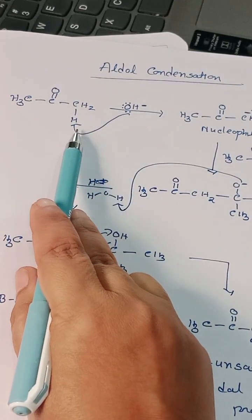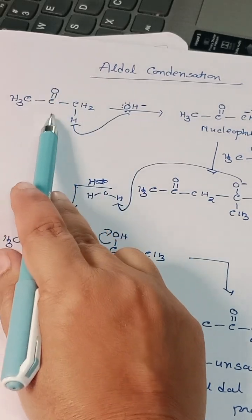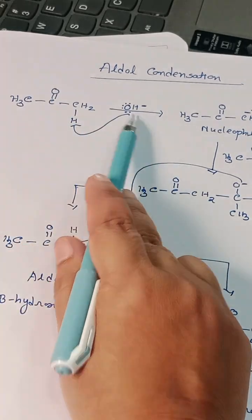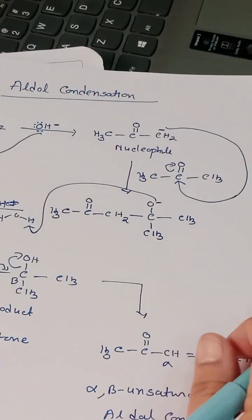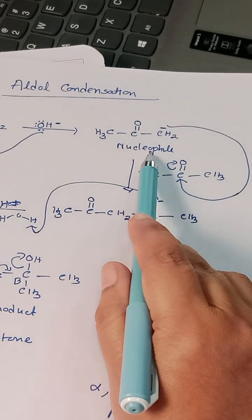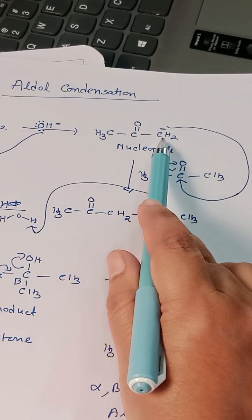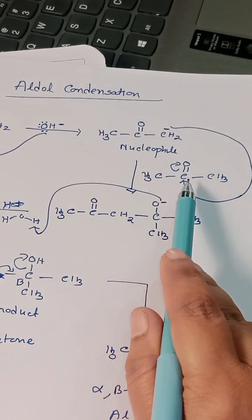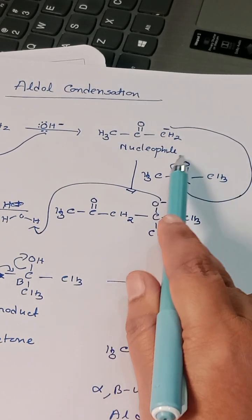This alpha hydrogen is acidic in nature due to presence of the carbonyl carbon. OH- abstracts this proton and we get the nucleophile. Here the nucleophilic center is carbon. Now this CH2- attacks the electrophilic carbon.